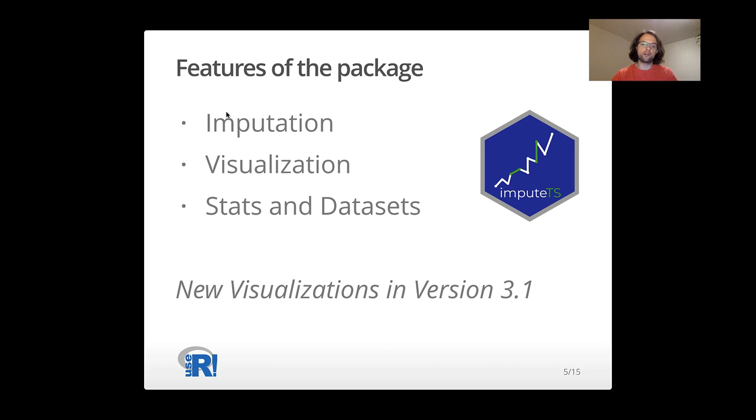These are functions for printing missing datasets and benchmark datasets for comparing imputation algorithms. Actually, we have new visualizations in the 3.1 version of the package, which we'll be talking shortly about. The package is currently ready on GitHub and soon will be on CRAN.